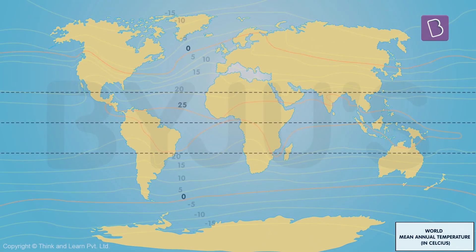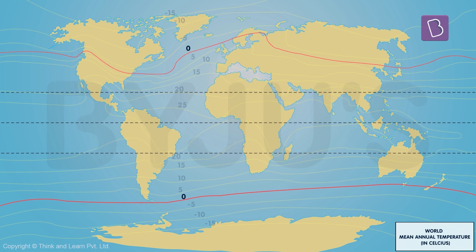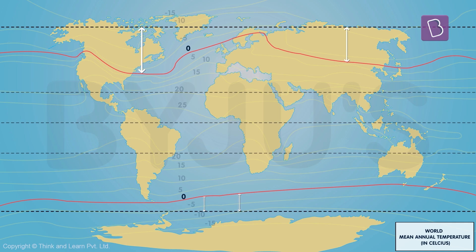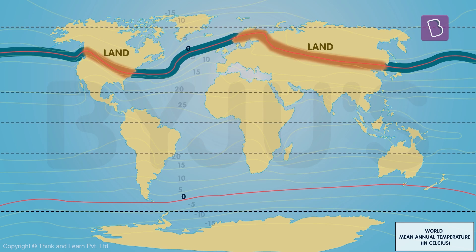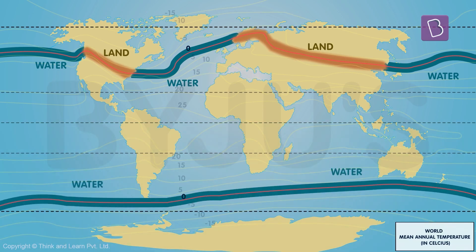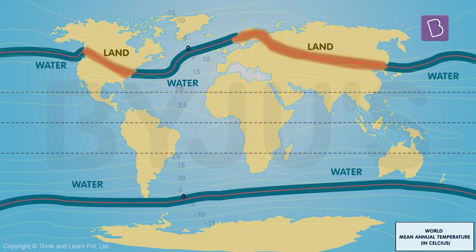Now observe the zero degree Celsius isotherm in the northern and southern hemispheres. In the northern hemisphere it varies a lot, while in the southern hemisphere it is almost straight, nearly parallel to the latitude. Why is that? In the northern hemisphere, the presence of land and ocean causes a variation in temperature, while in the southern hemisphere there is only water. Thus temperature variation is less, and hence isotherms are almost straight in the southern hemisphere.